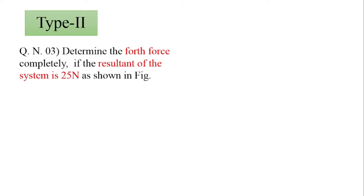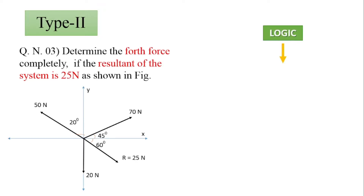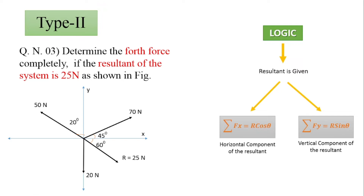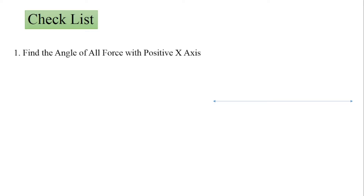The logic behind this type of numerical is: since the resultant is given, we find summation of Fx. We know that summation of Fx equals R·cosθ, where R is the resultant and θ is the angle made by the resultant with the horizontal. Summation of Fy equals R·sinθ. We use this logic to calculate the unknown force.